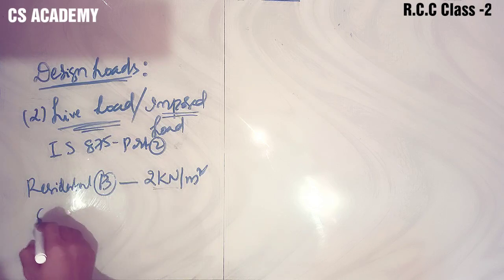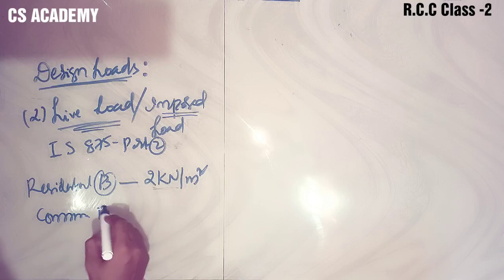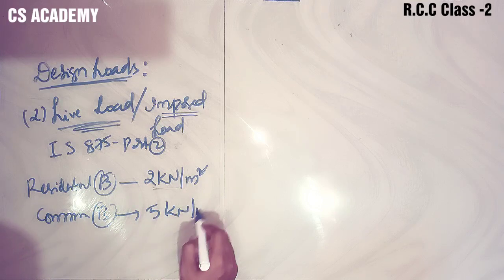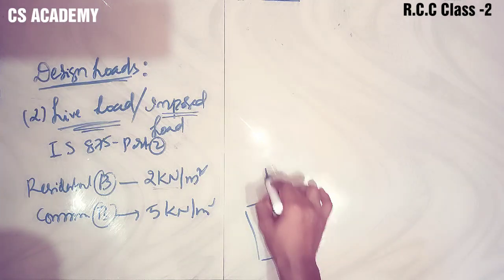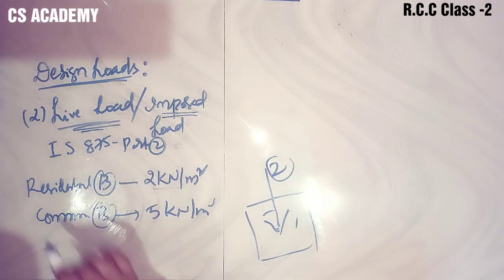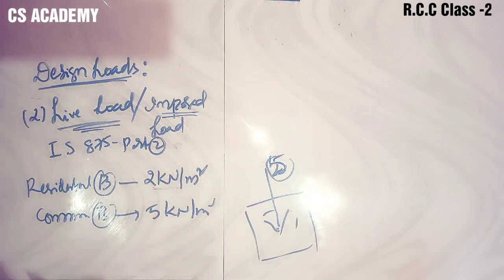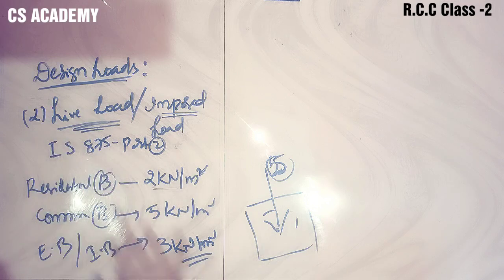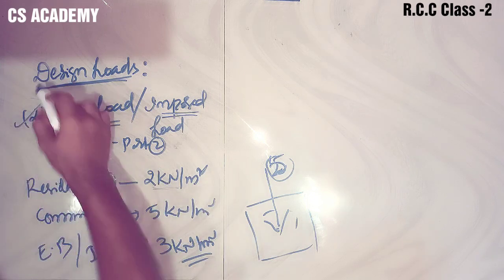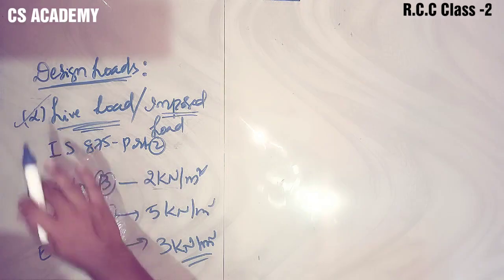For commercial buildings, the live load is 5 kN per meter square. For educational or institutional buildings, live loads also apply. So these are the design loads: residential building 2 kN/m², commercial building 5 kN/m². Second load is live load.